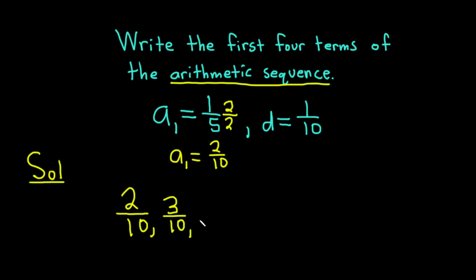To get the third term, we add d again because it's an arithmetic sequence. So 3 over 10 plus 1 over 10 is 4 over 10. And then adding it again is going to give us 5 over 10.